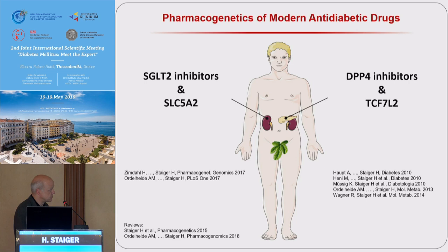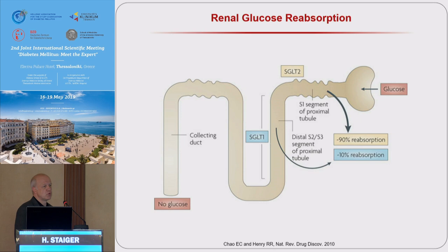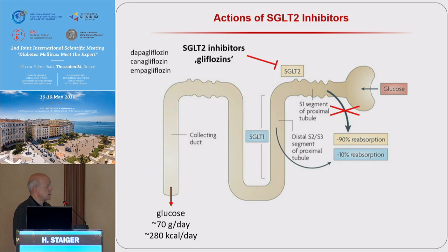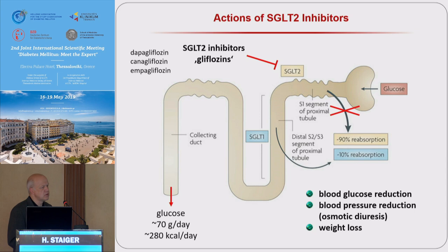But it's not the end of pharmacogenetics in other treatment options. In the following minutes, I will show you some data on the role of polymorphism in the TCF7L2 gene and its impact on treatment with DPP4 inhibitors, and on the role of polymorphism in the SLC5A2 gene, which encodes SGLT2, the glucose transporter in the kidney. SGLT2 is the major glucose transporter involved in renal glucose reabsorption in the proximal tubule, responsible for about 90% of reabsorption, so that in a healthy subject, no glucose is excreted in the urine. SGLT2 is also the target of the gliflozins.